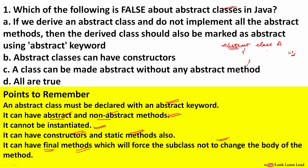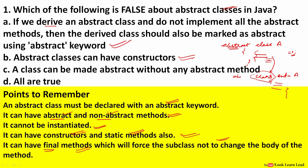If any class extends an abstract class — say class B extends class A — the abstract methods must be defined in the child class. If you extend an abstract class and do not implement all the abstract methods, the derived class itself has to be declared abstract. Abstract classes can have constructors, static methods, non-abstract methods, and final methods. A class can also be made abstract without any abstract method. So all the given statements are true — no statement is false.